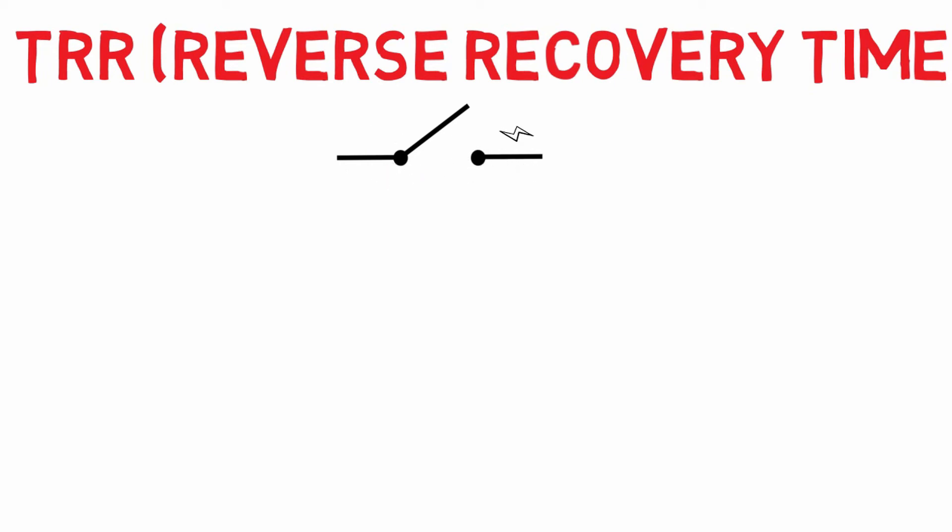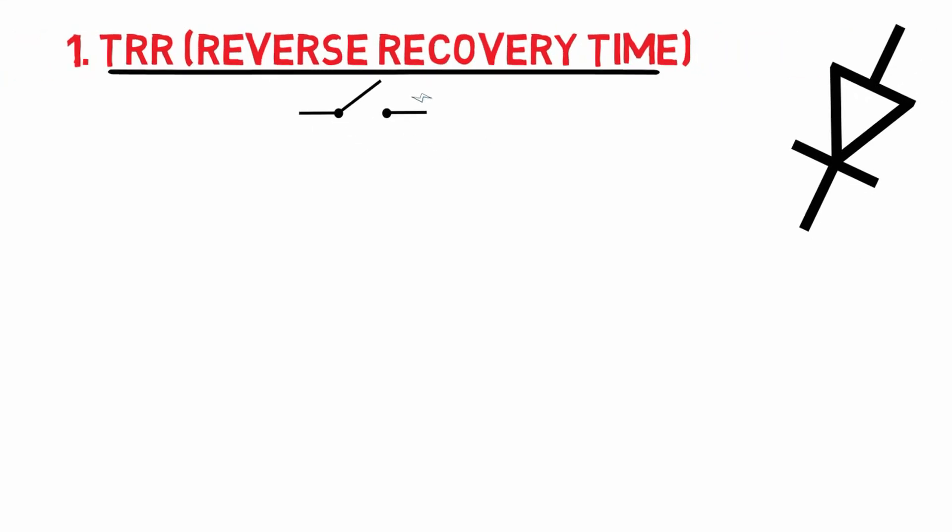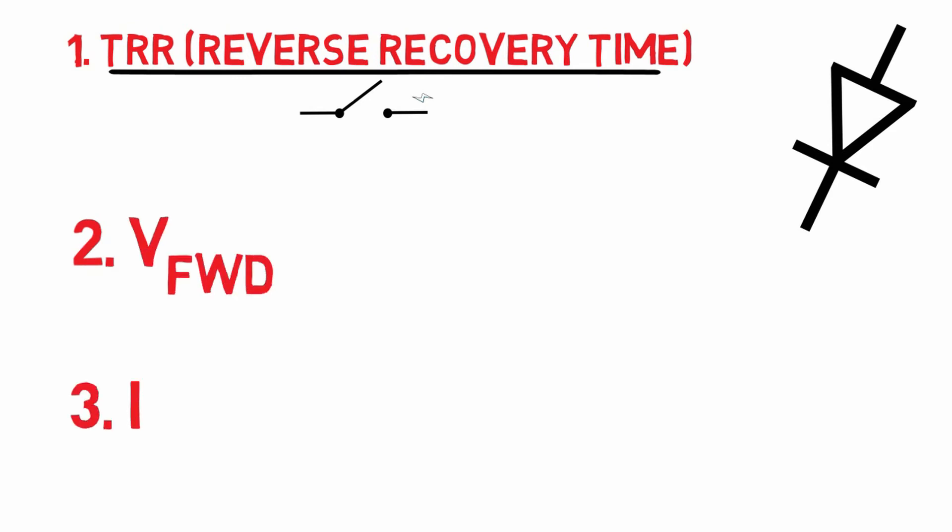And time required to complete that process is trr and this should be as minimum as possible. Second, forward voltage drop across the diode. It should also be minimum. Third is average diode current. It should be twice of maximum load current.